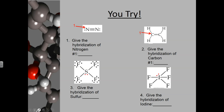Looking at the next examples: for nitrogen number one, it has a lone pair (one electron domain) and a triple bond (one electron domain) — two electron domains total. Counting S, p1 gives SP hybridization. So nitrogen number one is SP hybridized.